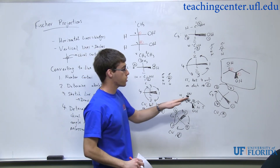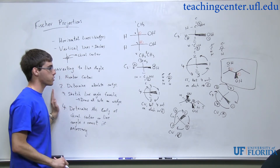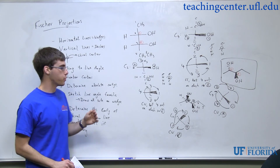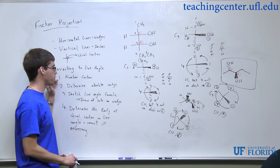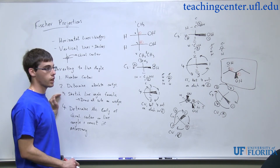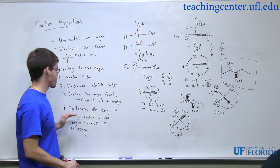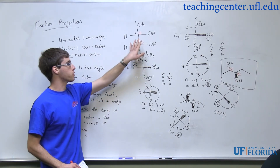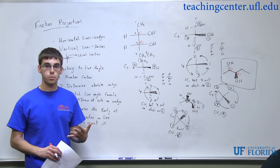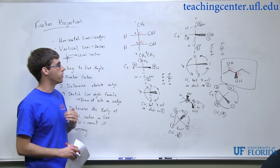If the question asks you to go from a line-angle formula to a Fischer projection, you do this same process in reverse. Instead of where it says line-angle formula, just replace that with Fischer projection. You would still number the carbons, still determine the absolute configuration on the chiral centers, then sketch out the Fischer projection and arbitrarily place the substituents on either the right or left. Do the absolute configuration on the Fischer projection, and if it's not correct, you just flip two groups and then you're good to go.